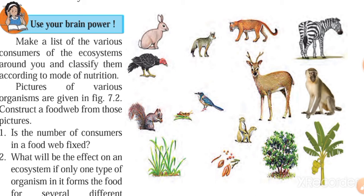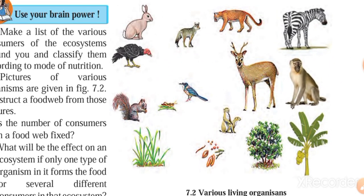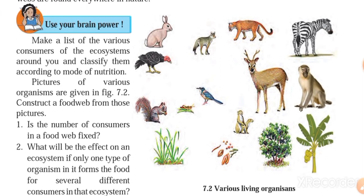Make a list of various consumers of the ecosystem around you and classify them according to mode of nutrition. From figure pictures, construct a food web. Is the number of consumers in a food web fixed? No — the number of consumers in a food web is not fixed; due to complex interactions, consumers keep on changing in any natural food web.